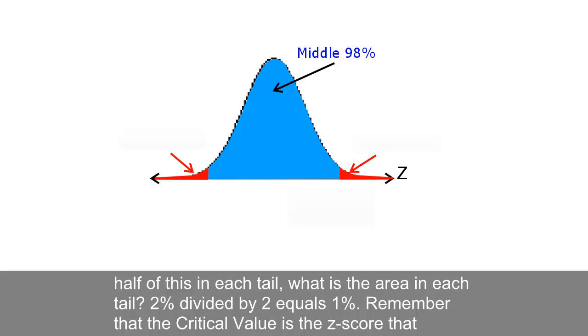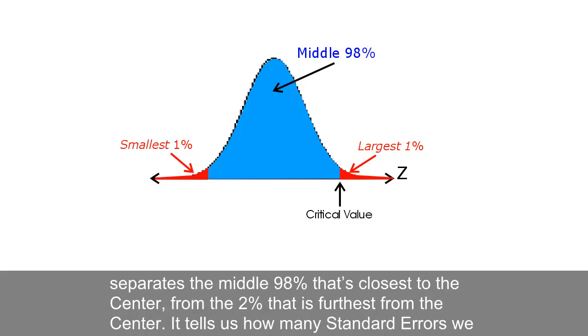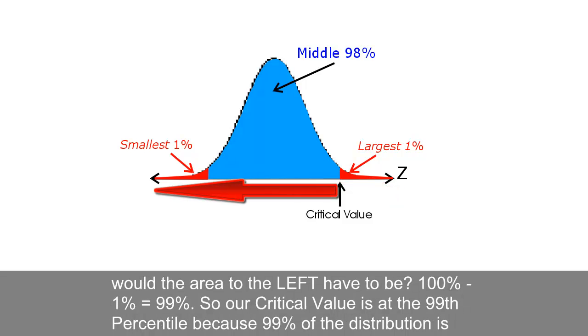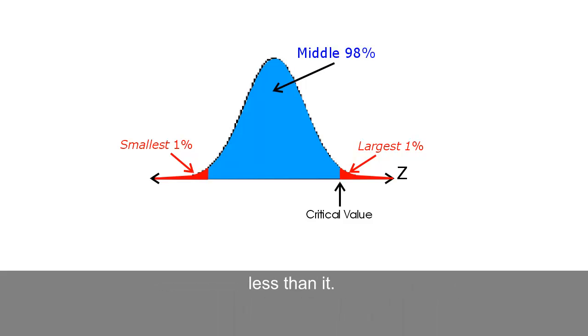Remember that the critical value is the z-score that separates the middle 98% that's closest to the center from the 2% that is furthest from the center. It tells us how many standard errors we need to go above and below the center in order to contain the middle 98%. Now if the area to the right of our critical value is 1%, what would the area to the left have to be? 100% minus 1% equals 99%. So our critical value is at the 99th percentile because 99% of the distribution is less than it.